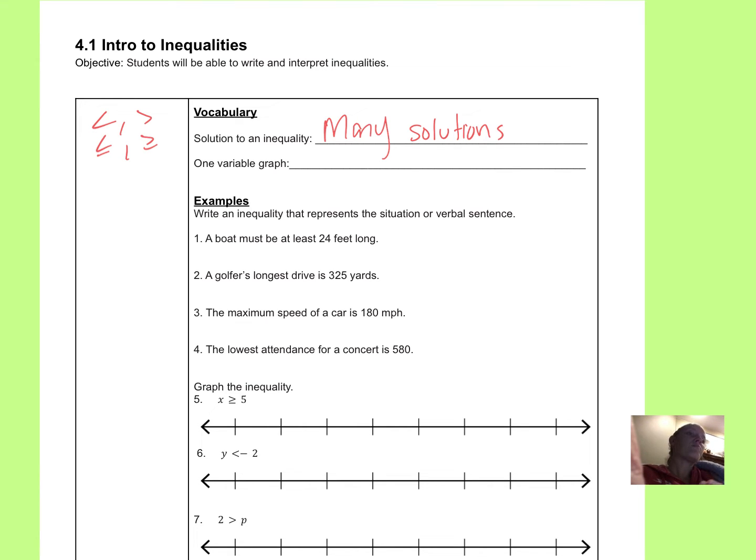So if I say x is greater than 2, that means every single number that's greater than 2, 3, 4, 5, 6, 7, and so on, they're all going to be solutions to the x is greater than 2. And then we can graph those solutions on a number line.